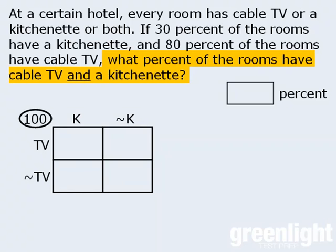Our goal is to determine what percent of the hotel rooms have cable TV and a kitchenette. Since this box represents rooms with cable TV and a kitchenette, all we need to do is find out the number of hotel rooms in this box, and we can then answer the question. So let's add a star to this box to remind us that this is our target box.